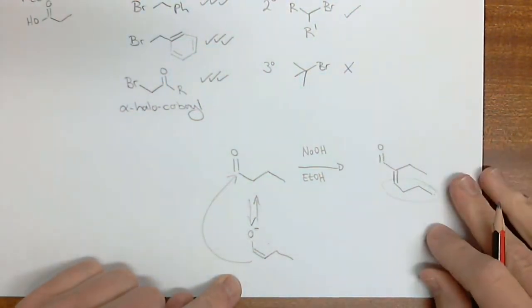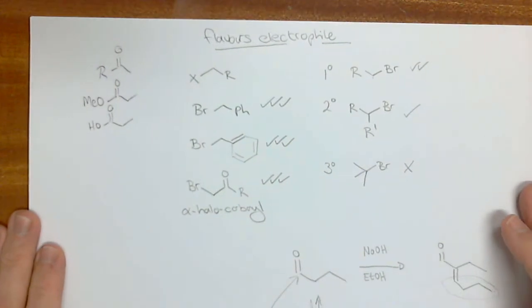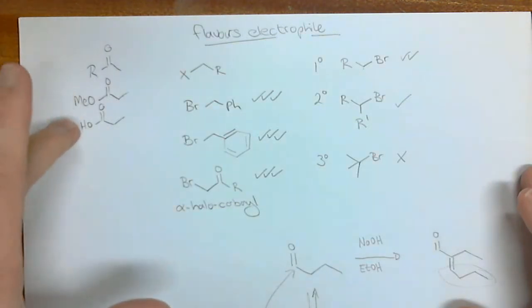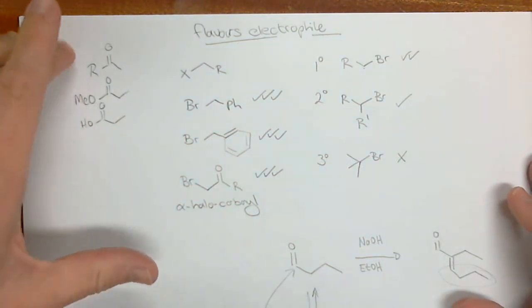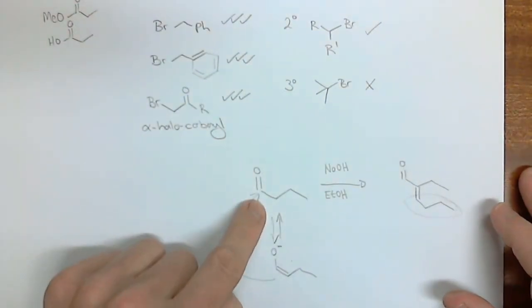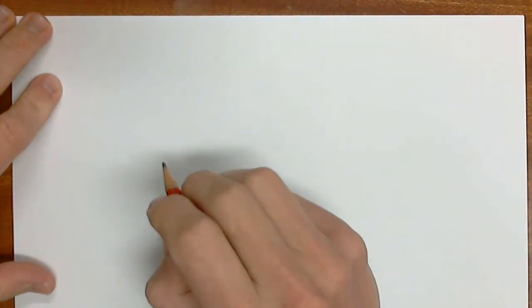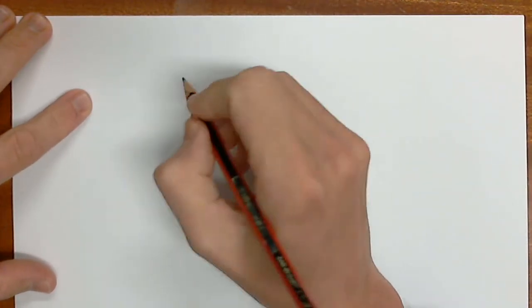We're going to deal with that in a few lectures' time. For now, we don't need to know that. But going back to this section, if we've learned how to alkylate these flavors of carbonyl compounds, how do we alkylate the aldehyde? There are actually three solutions to this problem. The first solution is not the best, but it is a solution, and that is to form the enamine.